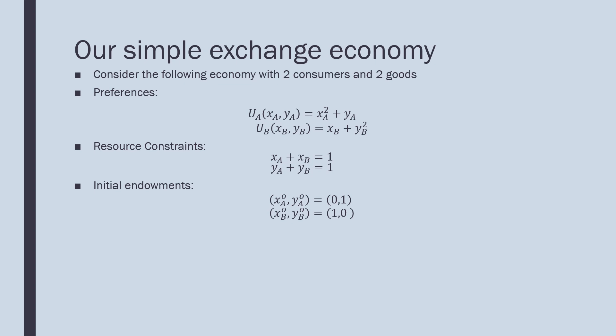The size of our economy, meaning the number of goods in motion as determined by our resource constraint, is one. There's one of good X and one of good Y, and these are perfectly divisible goods. The allocation starts with all of good Y in consumer A's pocket and all of good X in consumer B's pocket.